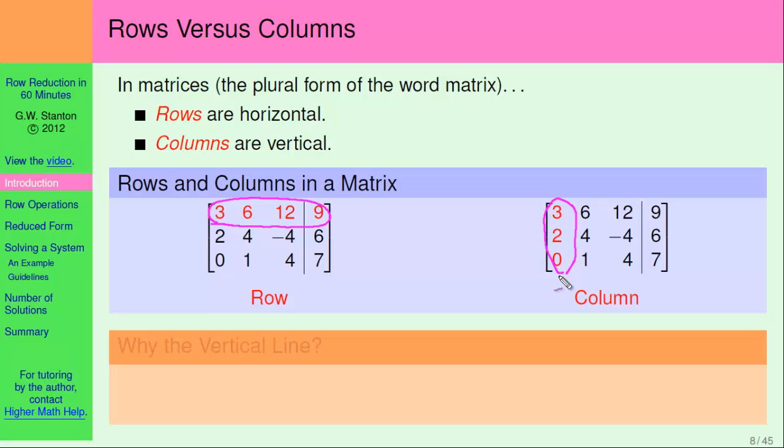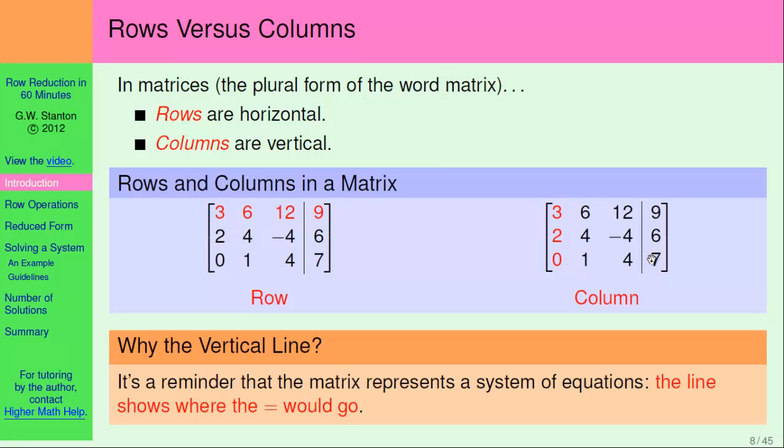And then one other question you might be asking yourself is, what's the deal with this line here? Well, it doesn't actually serve any mathematical purpose. It's really just a reminder to you that the matrix represents a system of equations, and the line is showing you where the equal sign would go. If you don't want to write it, then you don't have to. It's not going to affect your computations.